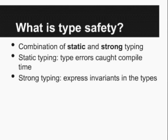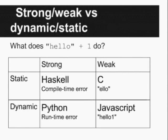Starting in the left column, we're talking about strong typing. In the top-left cell, we look at Haskell. When we compile the code 'hello plus one' in Haskell, this turns into a compile-time error — the compiler is able to catch it. As opposed to a dynamic language like Python, which is also strongly typed, but since it's dynamically typed, this error is not caught at compile time; it's caught at runtime, so it becomes a runtime error.